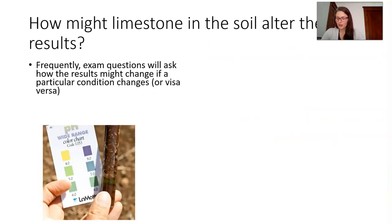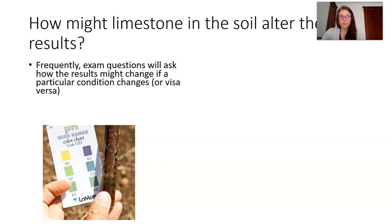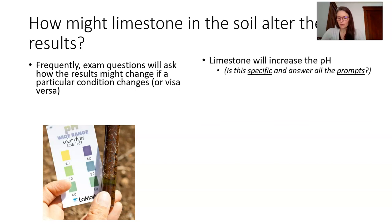I mentioned earlier that the exam will sometimes choose to alter one of the conditions of the experiment. In this case, what if we had a different parent rock for the formation of our soils? What if there was more limestone? You could say limestone will increase pH, but you have to ask yourself, is that answer specific and does it address all the problems?